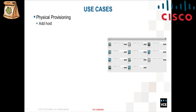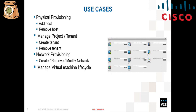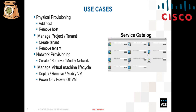These are some of the use cases that will be supported by the VCE solution. The first is physical provisioning — you can add or remove a compute host from an OpenStack solution. The second is tenant management — you can create or remove a tenant. The third is network provisioning — you can create, remove, or modify a network. And the fourth is virtual machine lifecycle management — deploy, remove, or modify a VM, and power on or power off a VM. On the right-hand side, you can see how the service catalog is going to look on the Red Hat CloudForms platform.